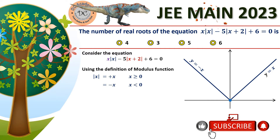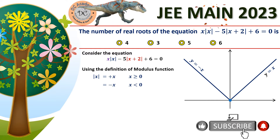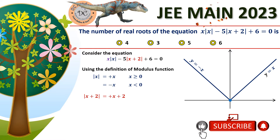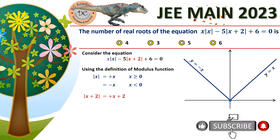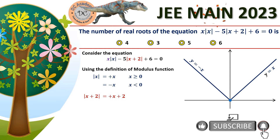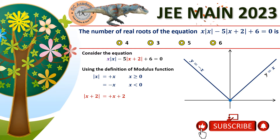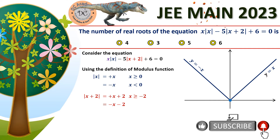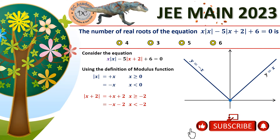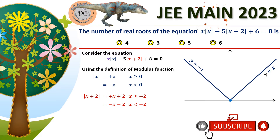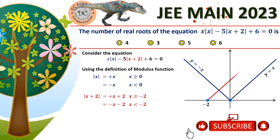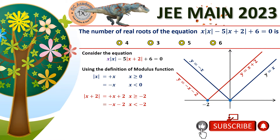The second modulus function in the equation is |x + 2|. By definition, |x + 2| equals x + 2 when x + 2 ≥ 0, i.e., x ≥ −2, and equals −(x + 2) when x < −2. So for x ≥ −2 it's the line y = x + 2, and for x < −2 it's y = −x − 2.